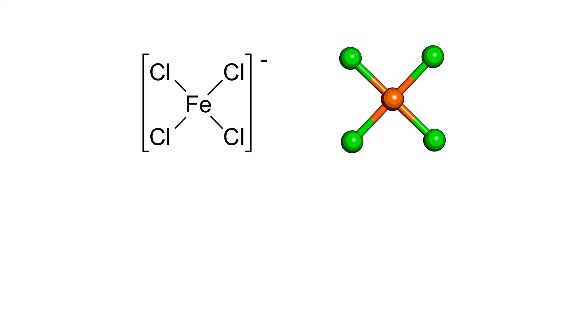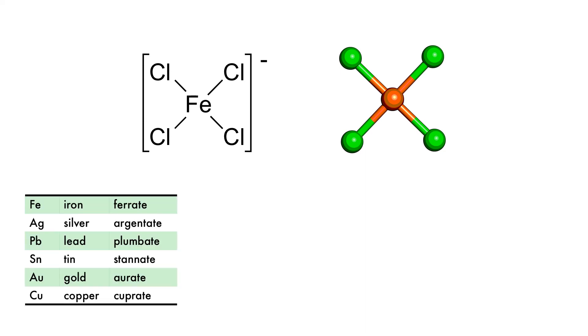Metals do not only exist as cations or neutral species, but also as anions. Most of the rules we have learnt remain the same, but when naming these compounds, we have one big difference that causes the name of the metal to change. These names are derived from the elemental source names.